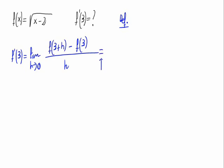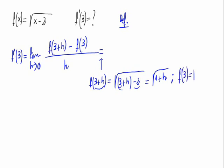Now, we substitute 3 plus h in f. It would be the square root of 3 plus h minus 2. This is the square root of 1 plus h. f of 3 would be the square root of 3 minus 2, the square root of 1, which is 1.